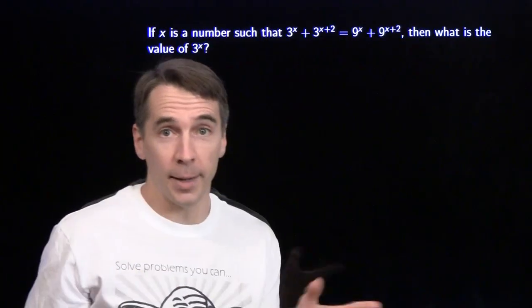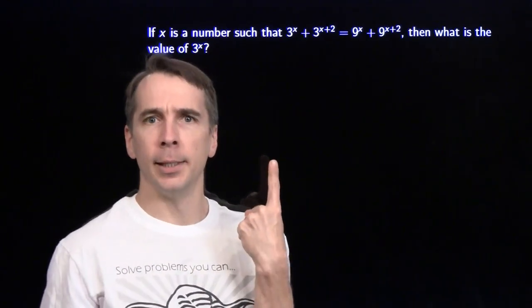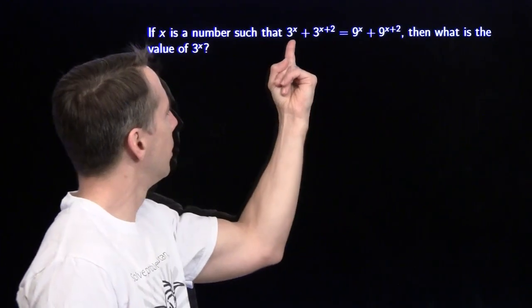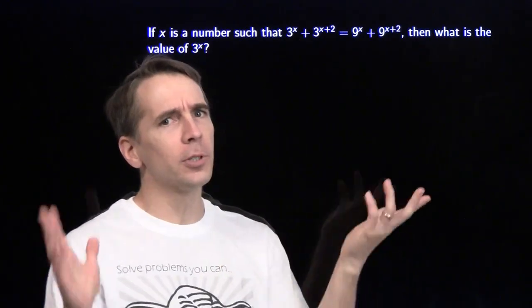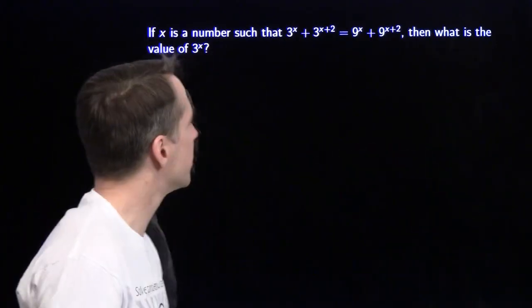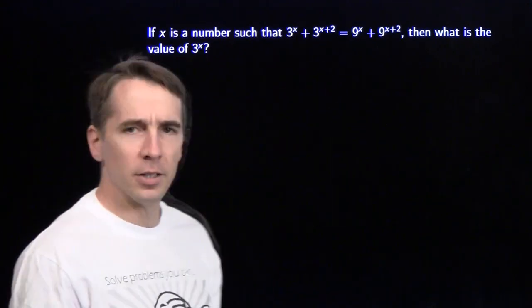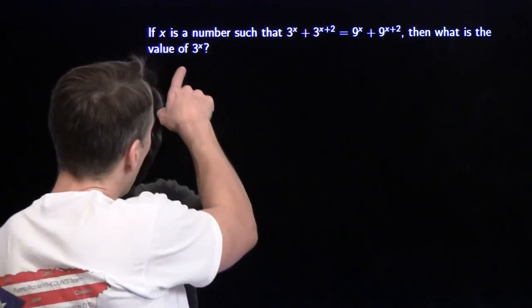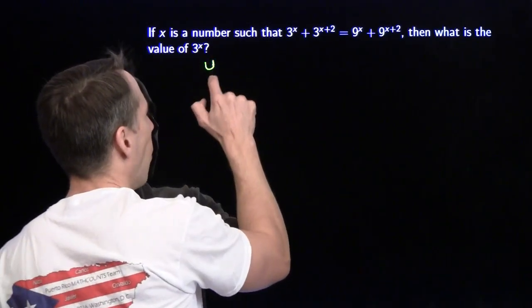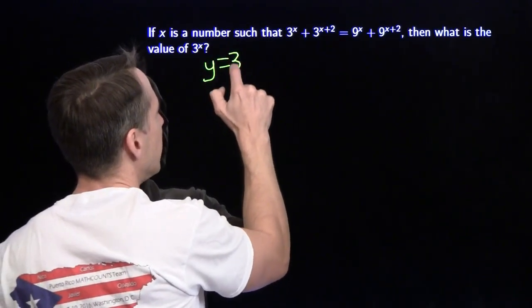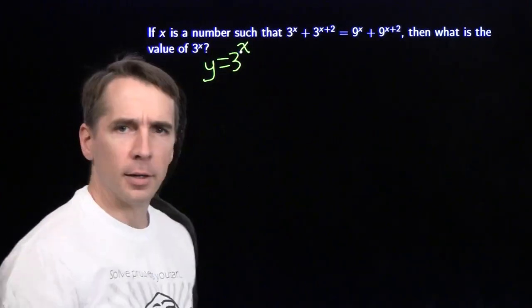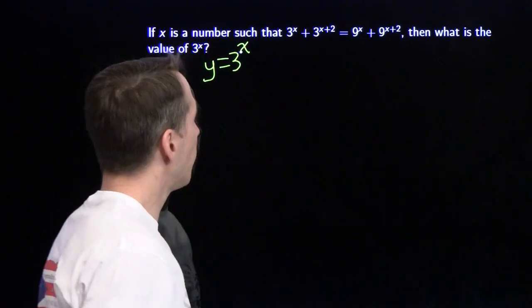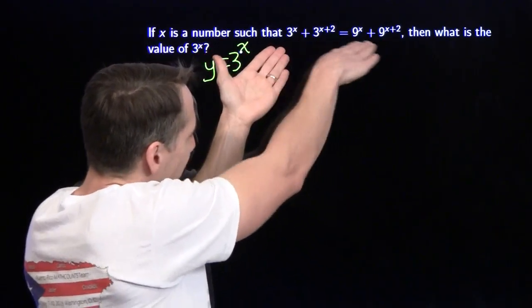Oh boy. This time we only have one variable. The problem is it's up here in the exponent. And that's a little freaky. We're used to linear equations, quadratic equations. So the first thing I'm going to do here is I'm going to try to pull that variable out of the exponent. We're looking for 3 to the x. So I'm going to say, okay, y equals 3 to the x. I can deal with y. That's a lot easier than dealing with that variable up in the exponent.